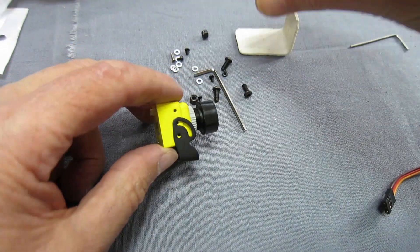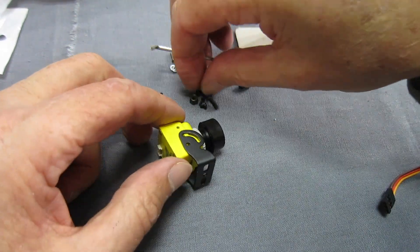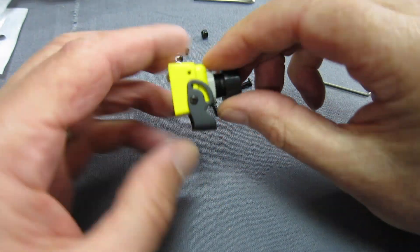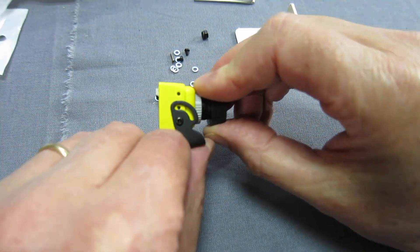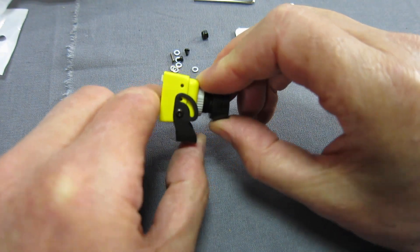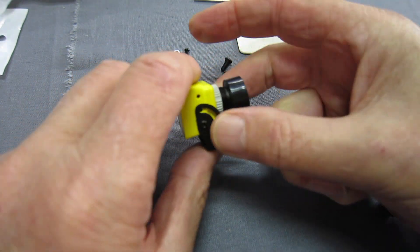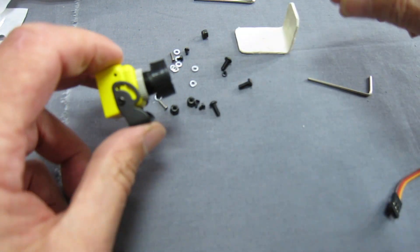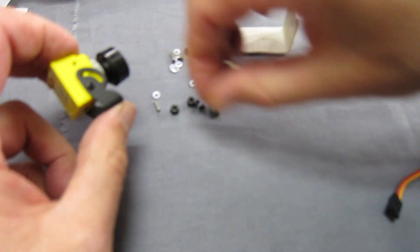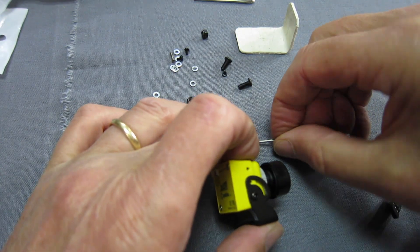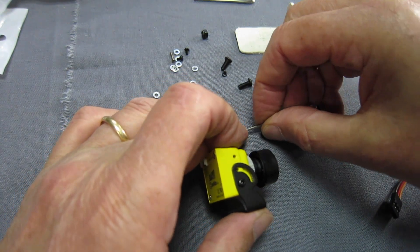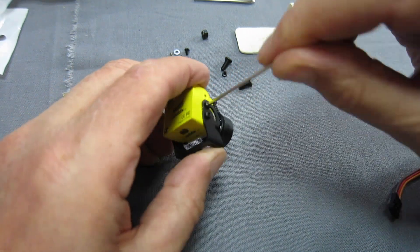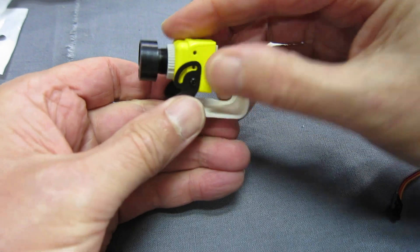So I'm just popping the Caddx camera into this little mount. Sort of just have to decide whether you're going to have the camera tilting forwards or tilting backwards, depending on which way you have this mount. I usually have to tilt my cameras down a little bit at the nose. So I'm mounting it this way and we put a little locking bolt in there to hold it in position. That is just going to sit up there like that.